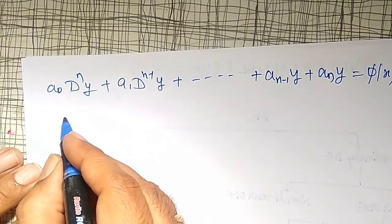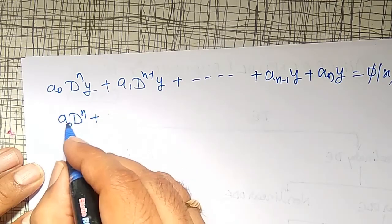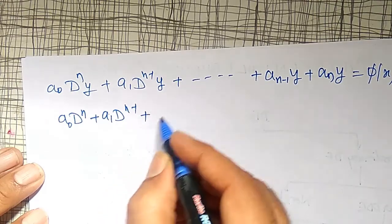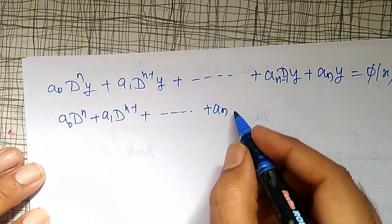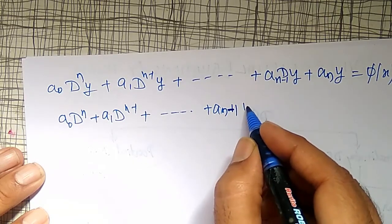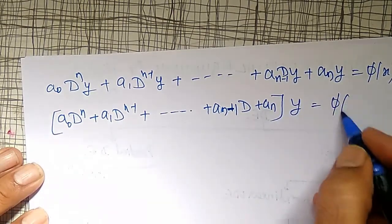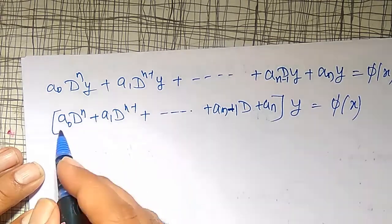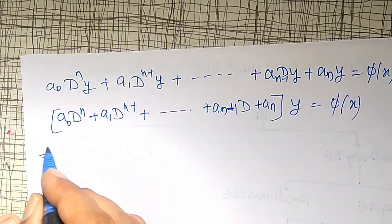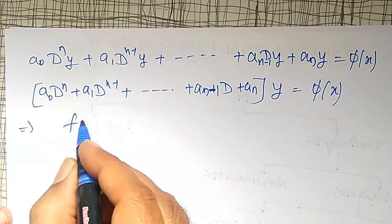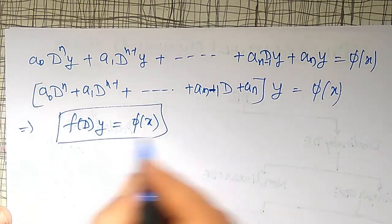Taking y common, this is purely a polynomial in D. Therefore I can simply write it as F(D) times y equals φ(x). This is the compact operator form of the differential equation.